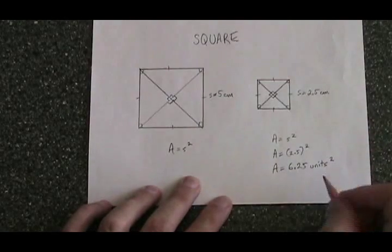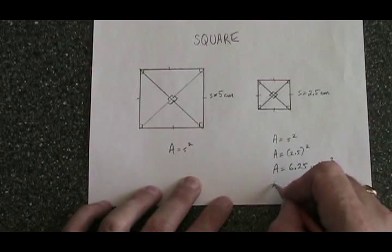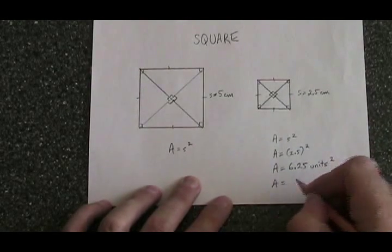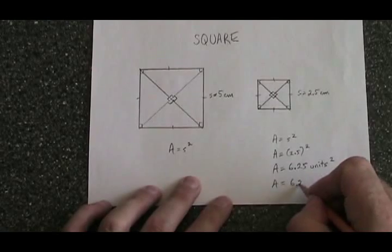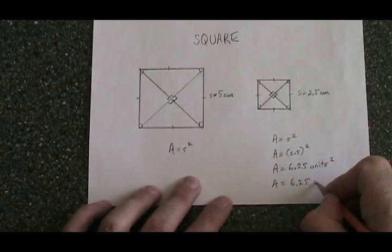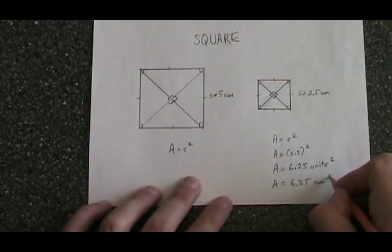In this case, the unit was a centimeter, so the area is 6.25 centimeters squared.